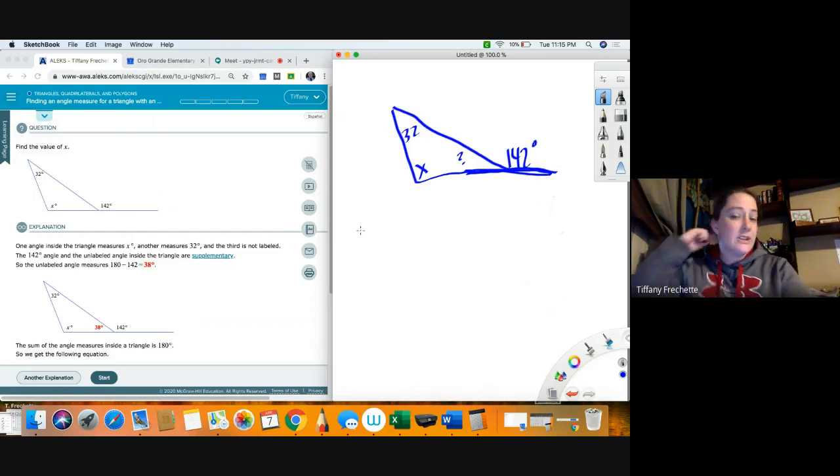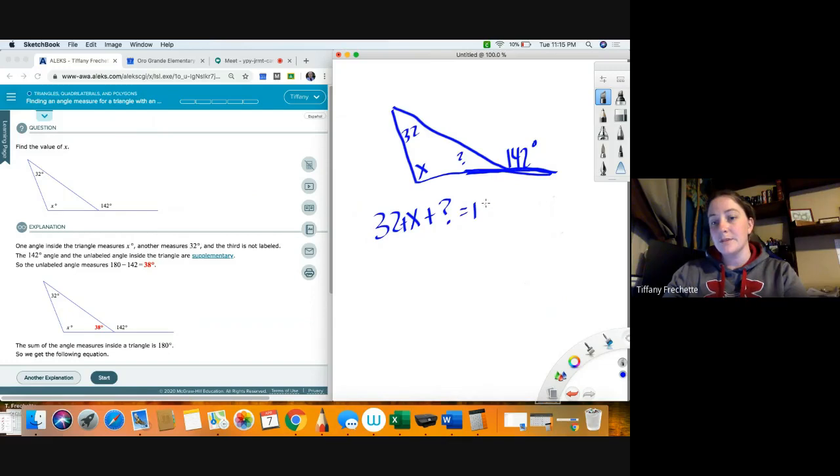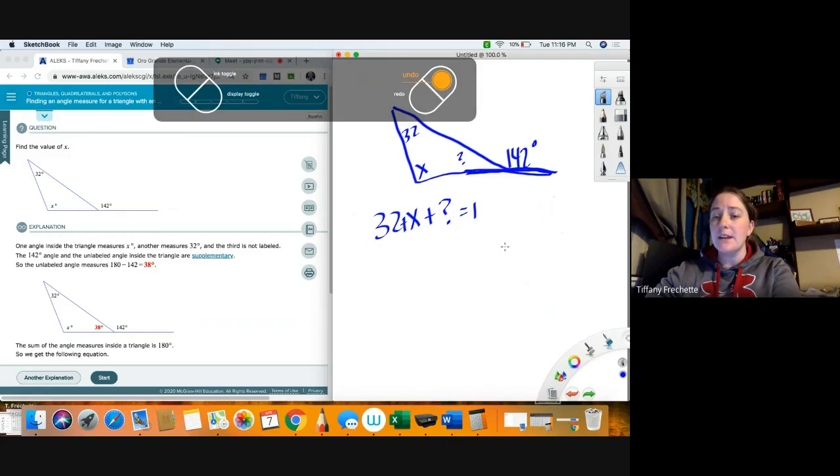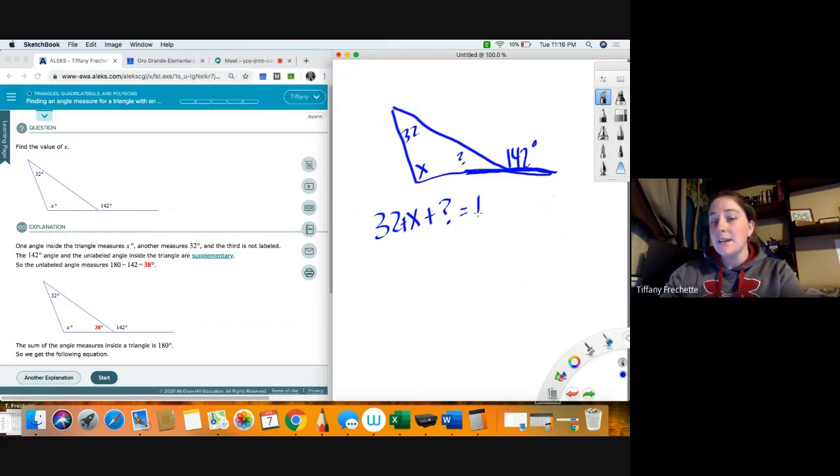Okay, so what I wanted to show you was a relationship that they're not quite bringing up to you. So if I have 32 plus X plus question mark equals 180, and then I also have question mark plus 142 equals 180, so they both equal 180 degrees. So I'm going to rewrite my equations here like this: 32 plus X plus question mark equals 180. Well I also know that this other one, 180 equals 142 plus question mark.